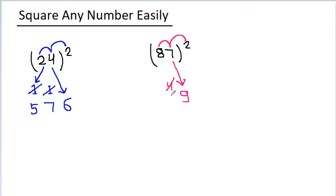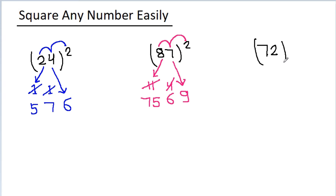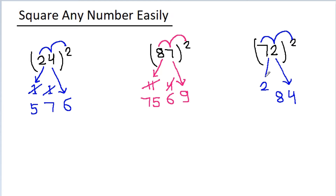So we have to write 1 digit, 6, and 11 will get carried. And 8 squared is 64, plus 11 is 75. And if we have to square 72, then 2 squared is 4, and 7 into 2 is 14, into 2 is 28. So 8 here and 2 will get carried, and 7 squared is 49, plus 2 is 51.